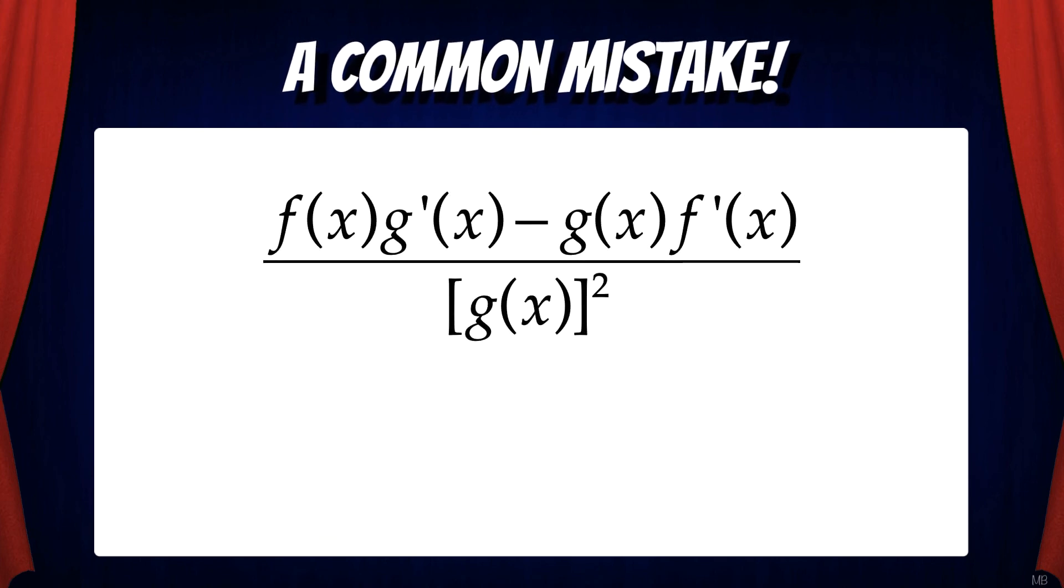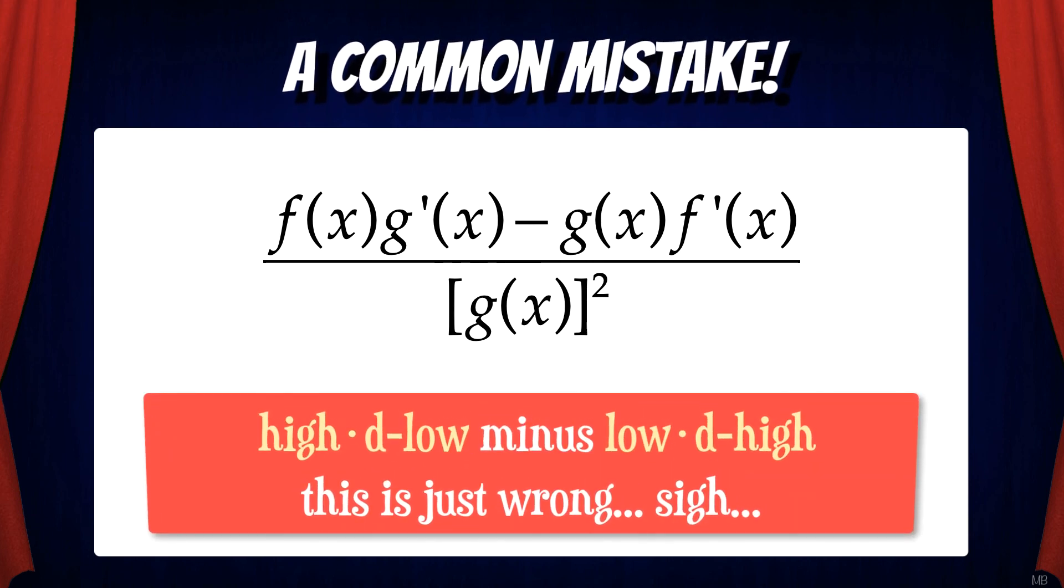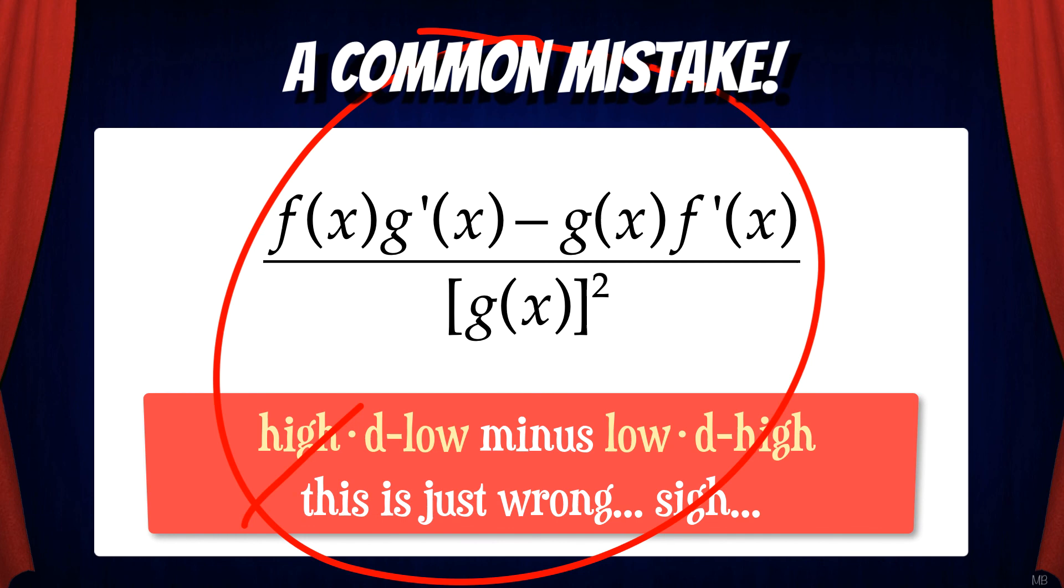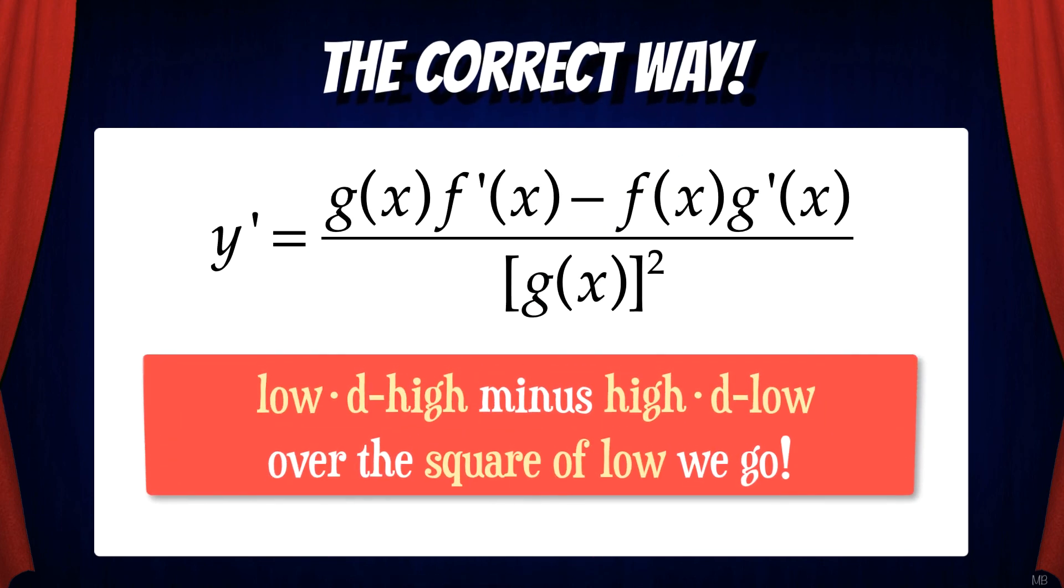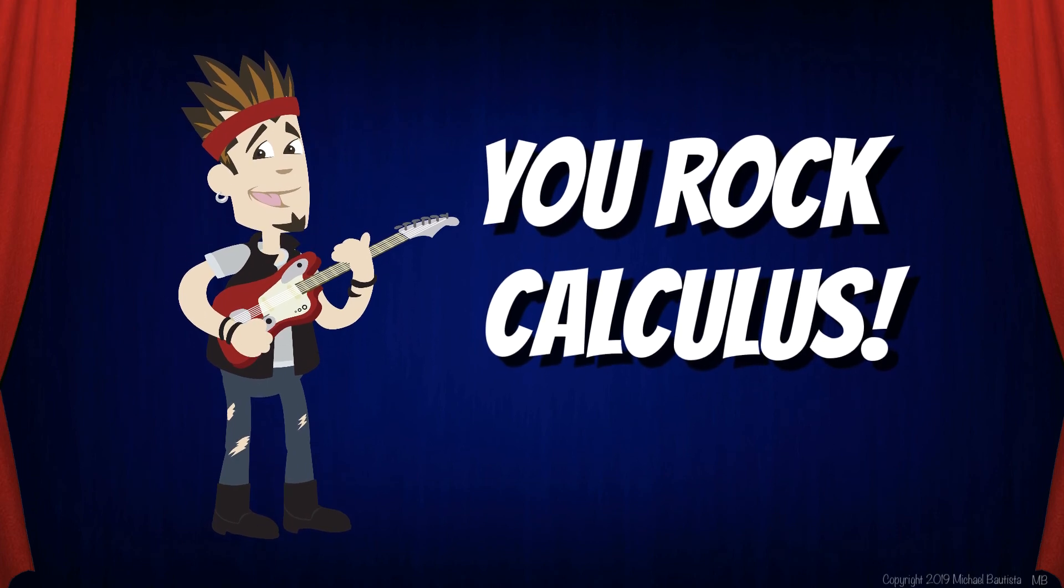Be aware of a common mistake that students make, which is accidentally switching the top terms. What I mean is students will sometimes do high d low minus low d high. And that's just wrong. So please remember the correct way. Low d high minus high d low over the square of low we go. And that's how you rock calculus!